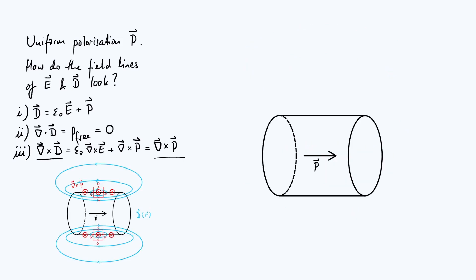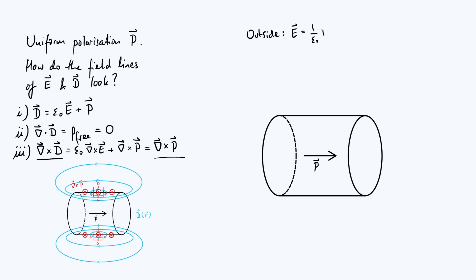Now we have to think about the electric field E, and this is where things get potentially a little surprising. We'll start outside the electret because that's easiest: from equation 1, since P = 0 outside, we have E = D/ε₀. So E is proportional to D outside the electret, and the E field lines have essentially the same shape as the D field lines there — they just differ by the scalar factor 1/ε₀.